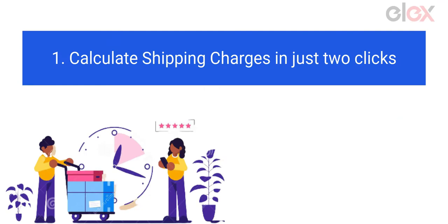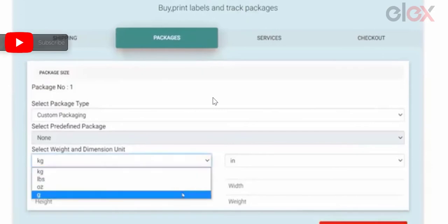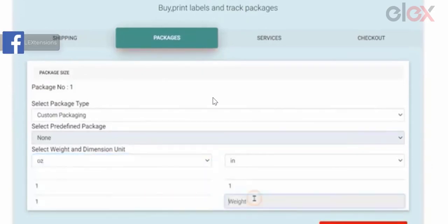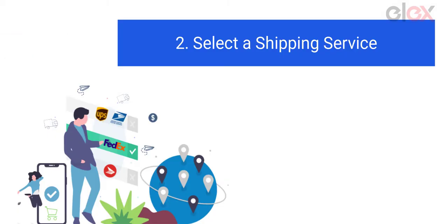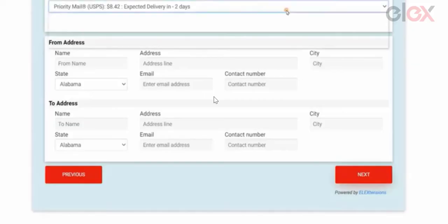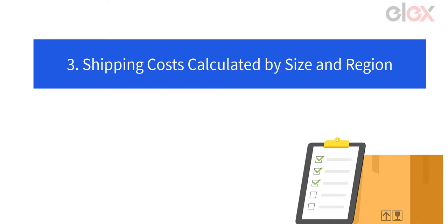Here are the benefits of adding a shipping calculator to your website. Number one: in just two clicks, you can calculate shipping rates and estimated delivery dates for all available shipping services based on the shipper's zip code, address, and country, as well as the weight and dimensions of the packages. Number two: both you and your customers can check the pricing and estimated delivery dates of available shipping services to get the most convenient shipping option.